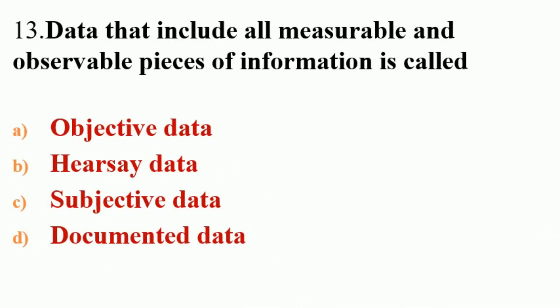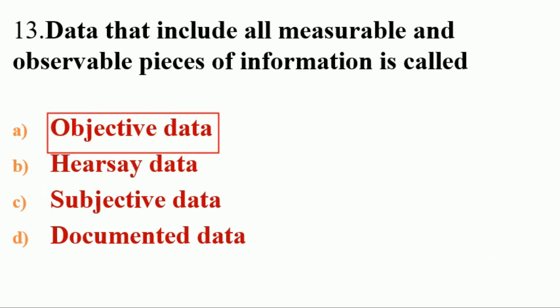Next question: data that includes all measurable and observable pieces of information is called — options: A. objective data, B. Hershey data, C. subjective data, D. documented data. The answer is A, objective data.